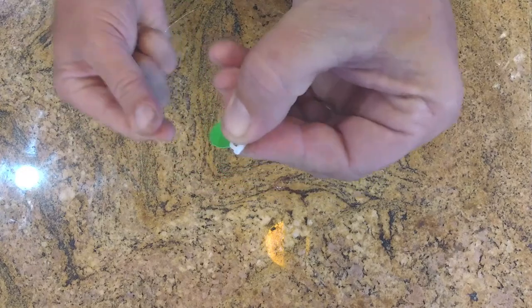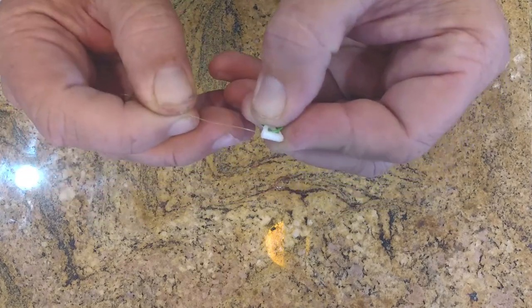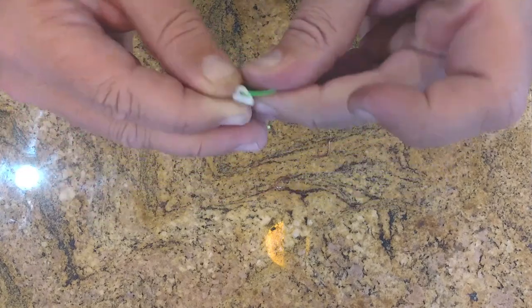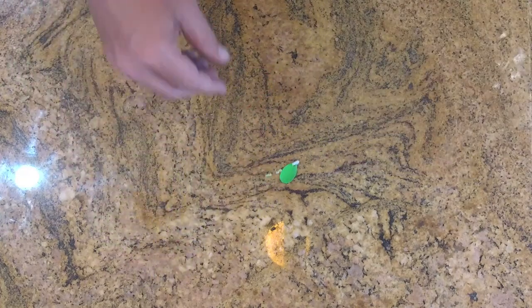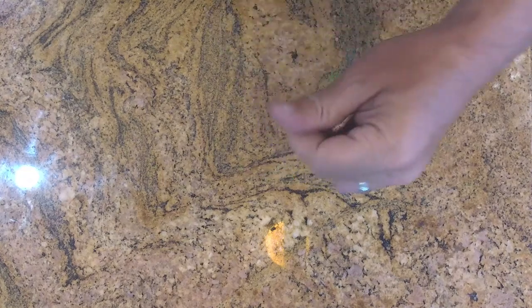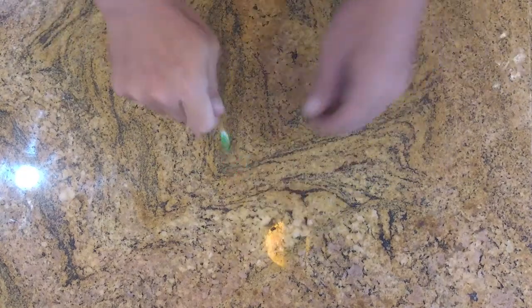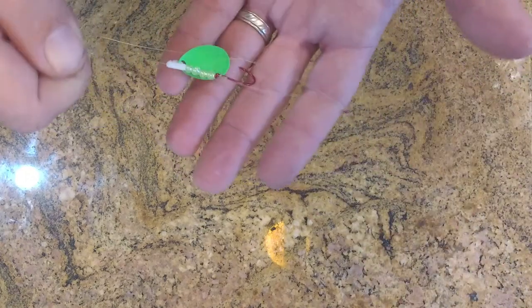And I'm using a quick change clip, the white, so that way I can interchange my blades if I want to. And there's my rig. I have a nice two blade crawler walleye rig at the bottom.